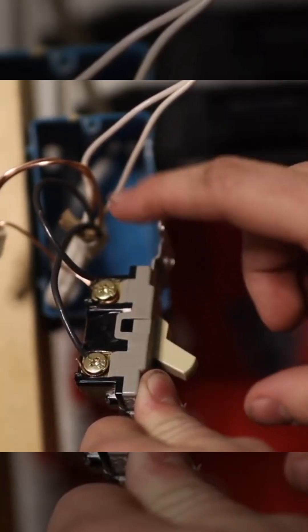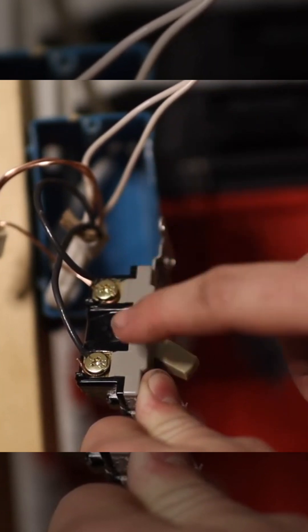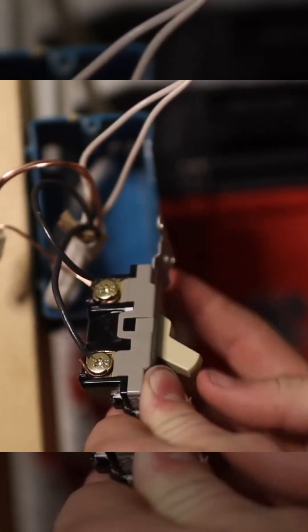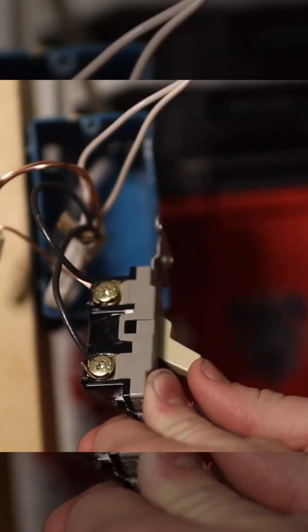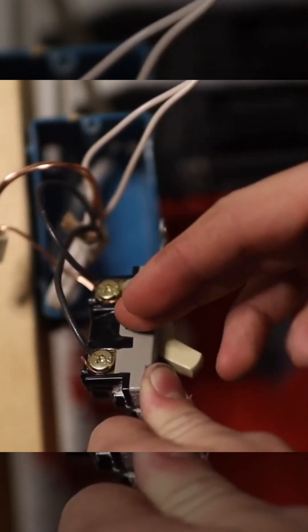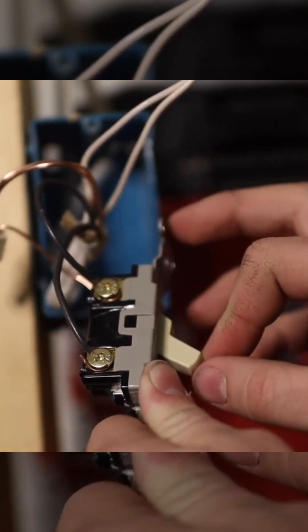You'll land one black wire to one terminal and then one black wire to the other. It doesn't matter which one you land which one to. Either way, it cuts off in the middle here and separates when you flip that switch off.